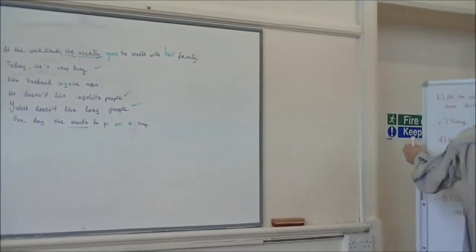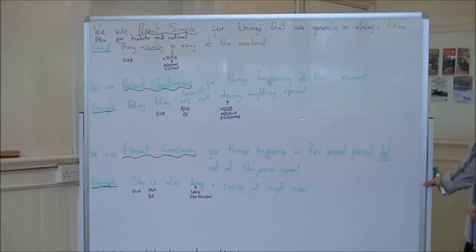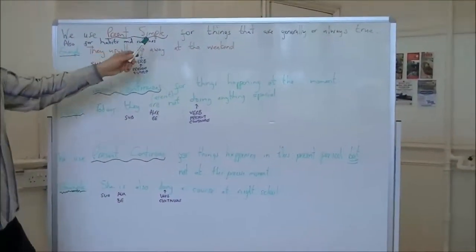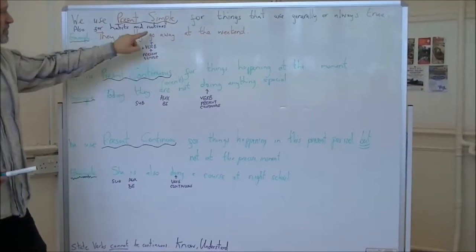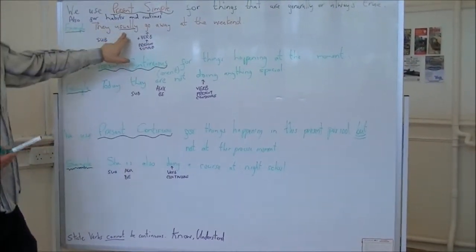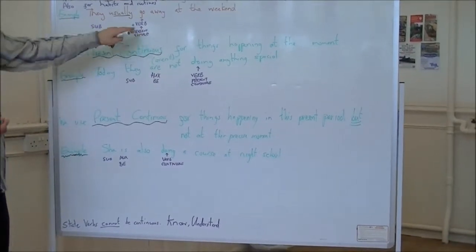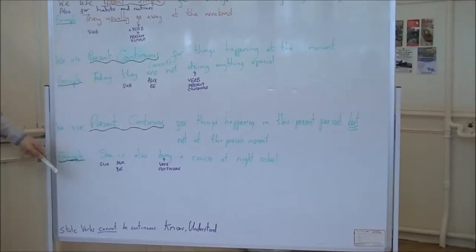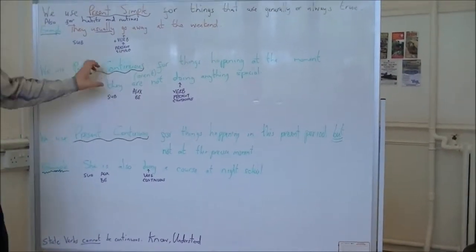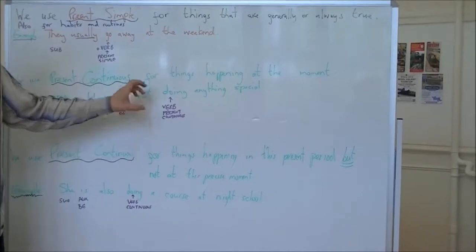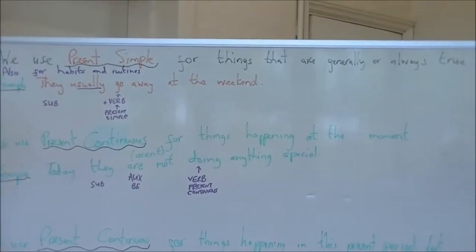We have to remember our rules for present simple and present continuous. Present simple for habits, for routines, for things that are generally true, and we use the subject with a verb, and the verb is always in the present simple. Sometimes we use a little adverb of frequency for the habits and the routines, but in general these are the things we need to remember. For present continuous we need to remember the subject plus the verb to be plus the present continuous. So today they are not, because it's negative, doing anything. If it's negative you just add the not after the verb to be.